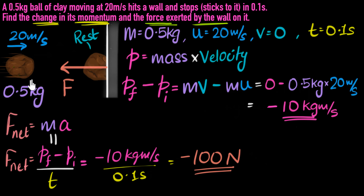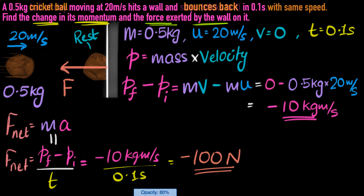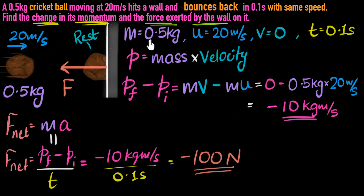Now let's do another problem, similar to this one, but instead of a clay ball, let's say it's a cricket ball. Most of the setup is the same, but the key difference is that it hits the wall and bounces back with the same speed — it doesn't stick. Can you think about how the situation would change? Try to draw a new diagram and figure out the change in momentum and the force exerted by the wall.